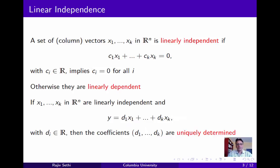If the vectors x_1 to x_k in R^n are linearly independent, and you have some other vector y that can be expressed as a linear combination of these, then the coefficients of this linear combination, the d_i, are uniquely determined. In other words, if your vectors x_1 to x_k are linearly independent, you can't express y as a linear combination of these in two different ways. The proof of this is just a couple of lines, and I'll leave it as an exercise.